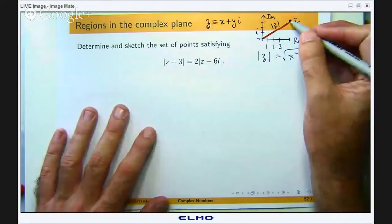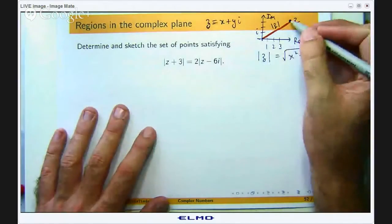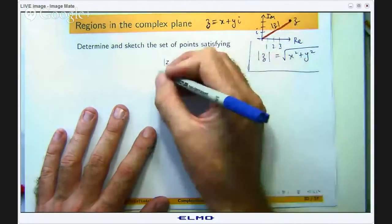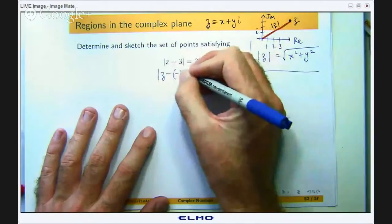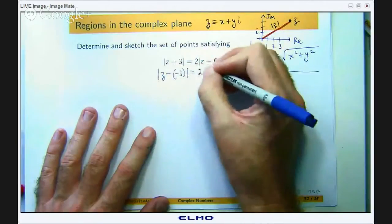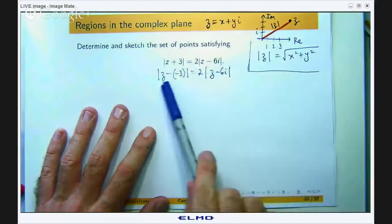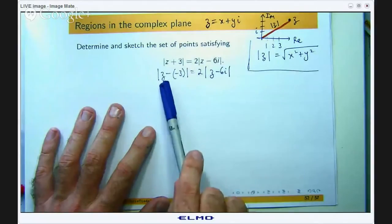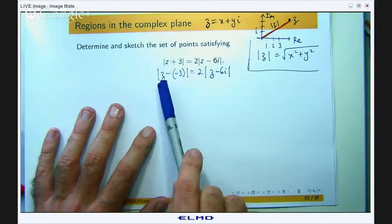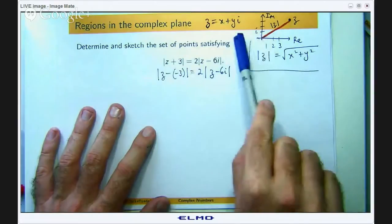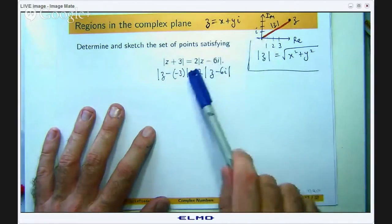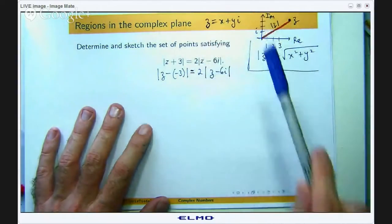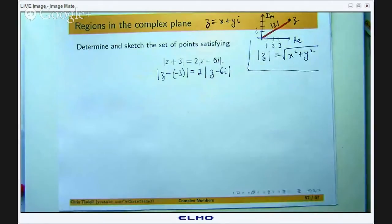Now if this measures the distance from a point to the origin, what do these things do? Well it is on a similar tip if I write it like this. This here says that we are interested in the point z whose distance between the point z and the point negative 3, which will lie on the real axis over here, is twice times the distance from z to 6i, which will lie somewhere up here on the imaginary axis. So they are the set of points that we are interested in.